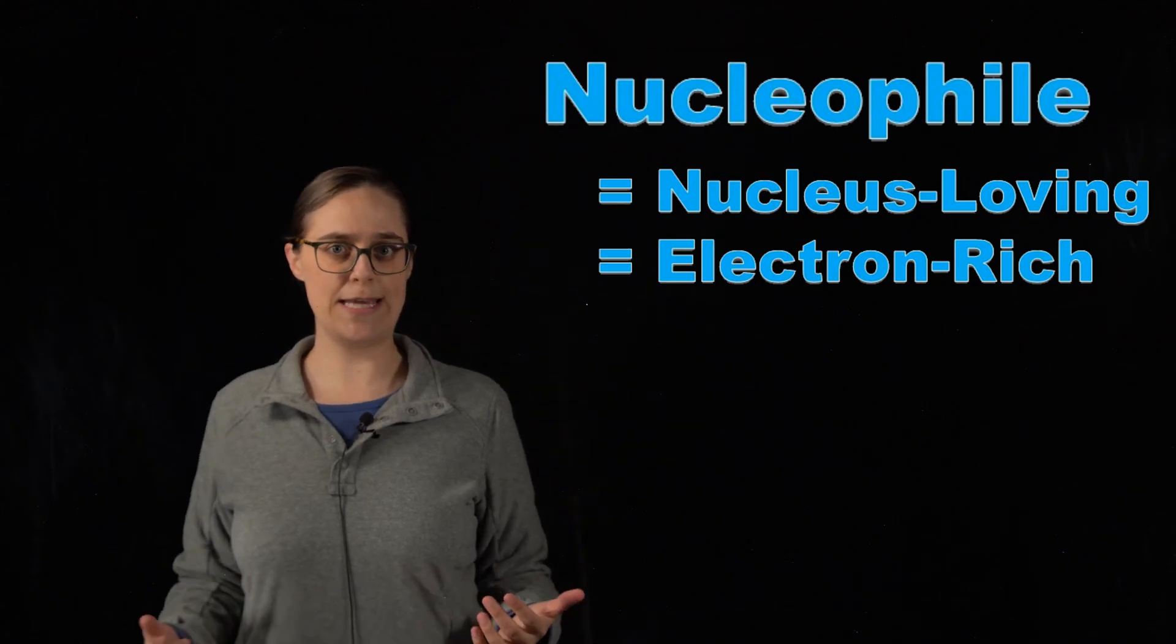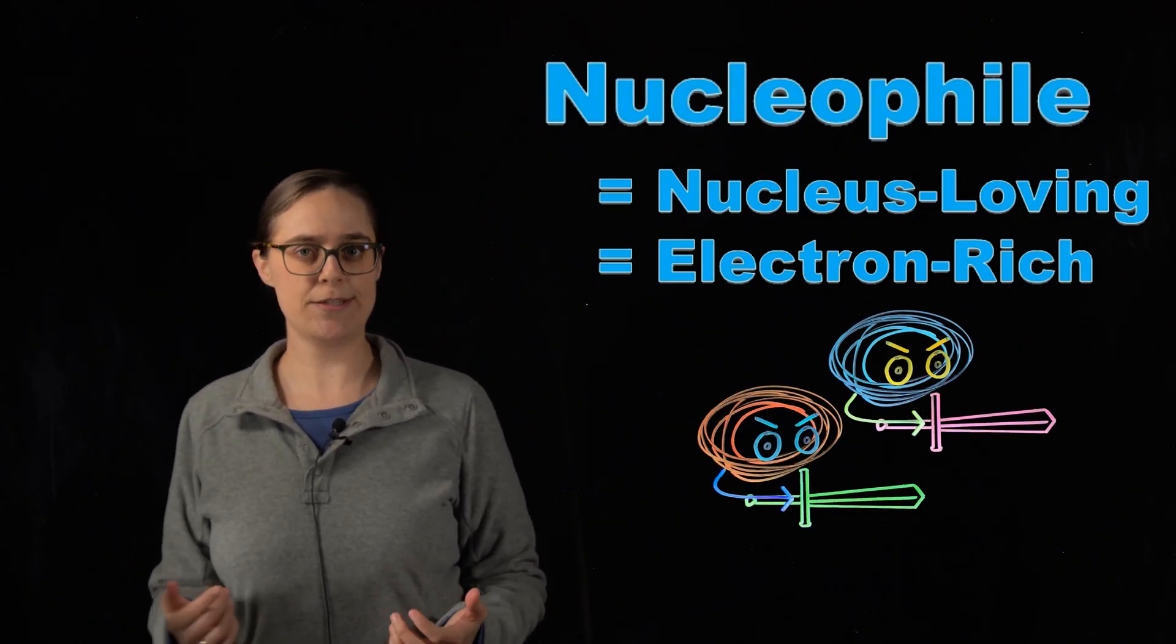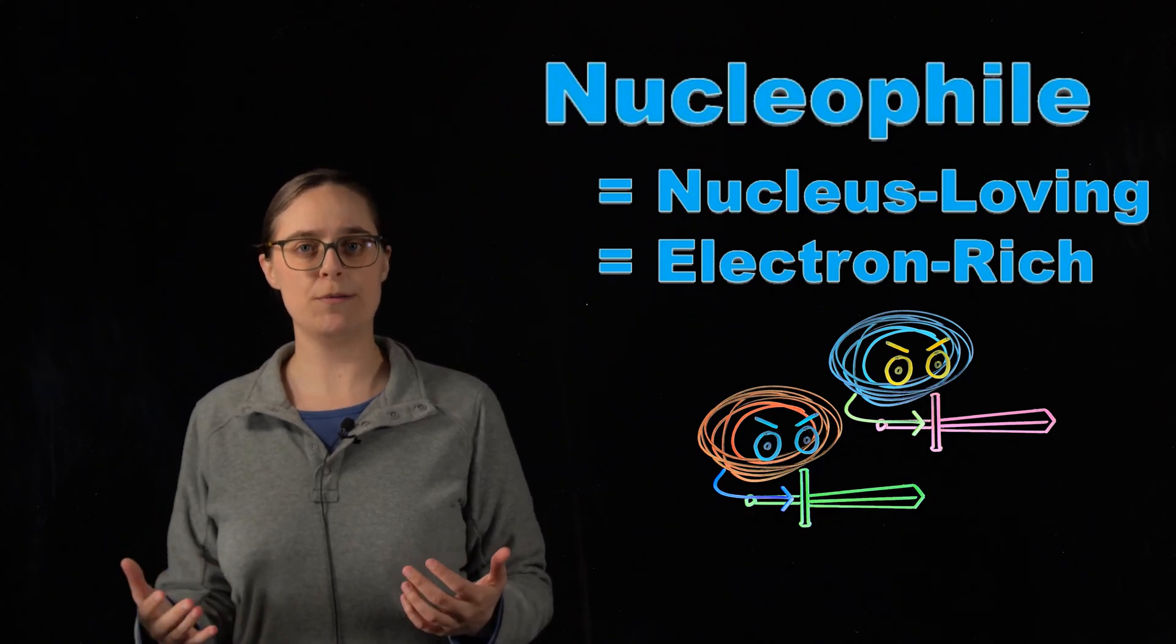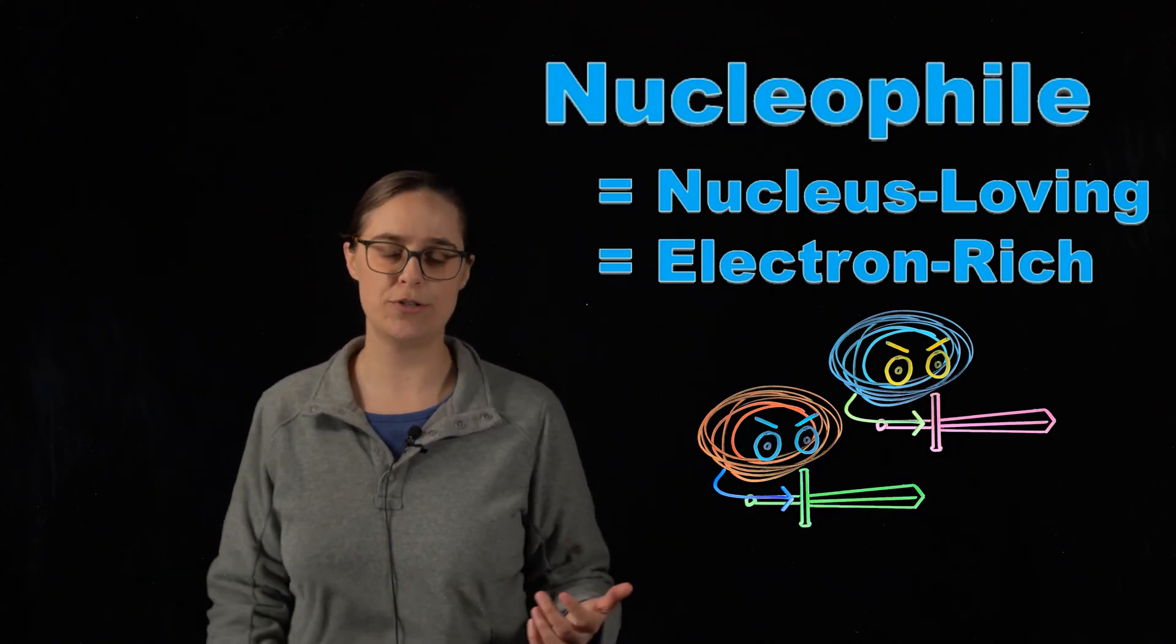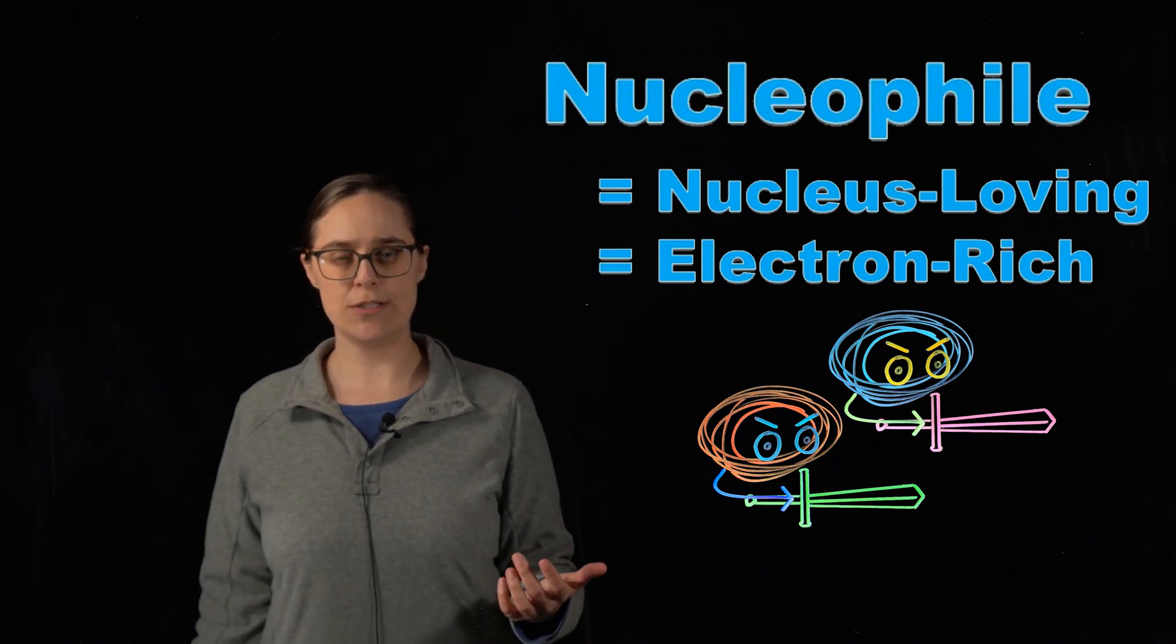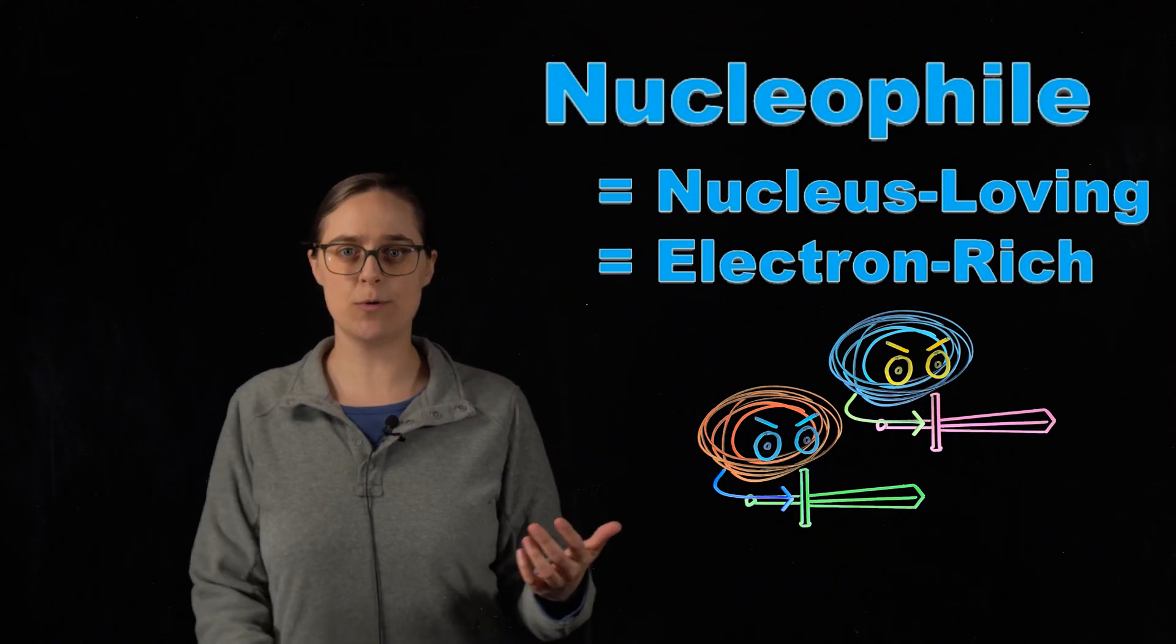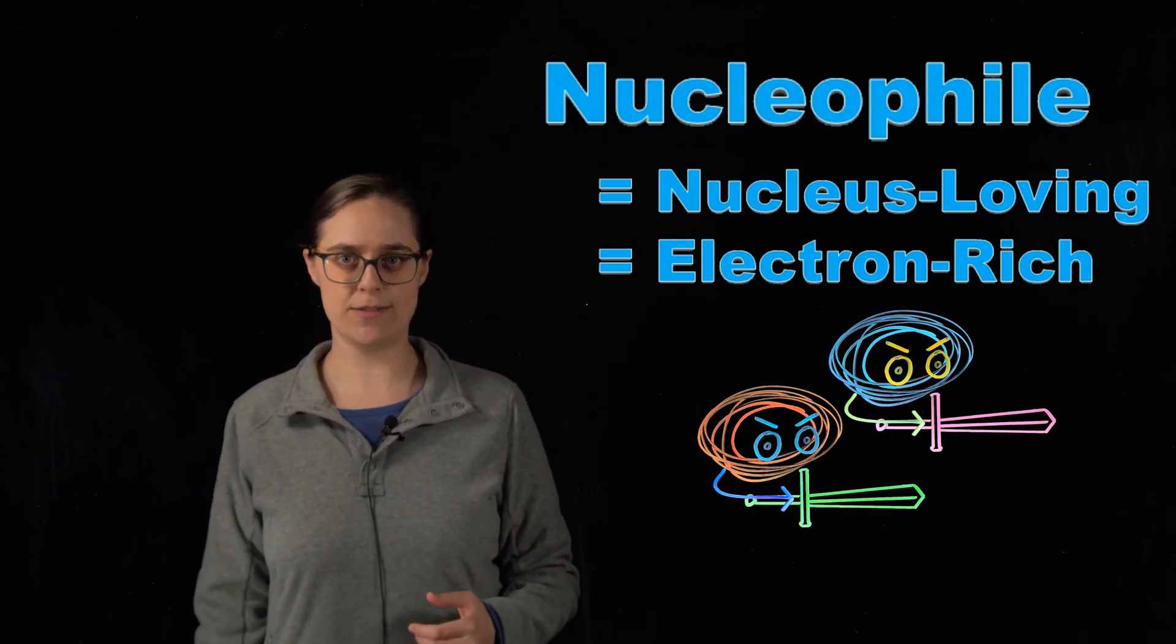Now the nucleus of any atom has a positive charge and opposite charges attract. So a nucleophile is going to be something that is negatively charged. In other words, something that is rich in electrons. So it's often going to be a lone pair of electrons or a multiple bond with lots and lots of electrons.